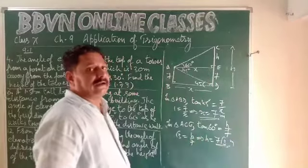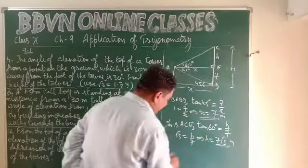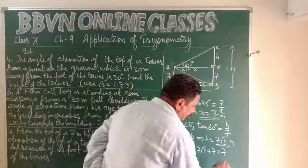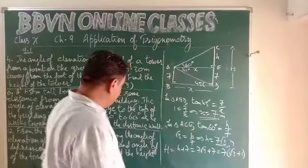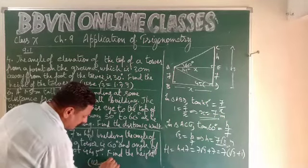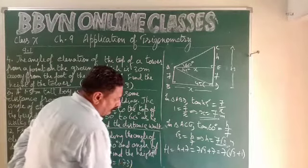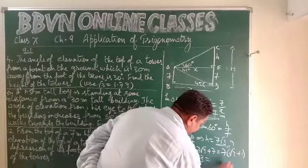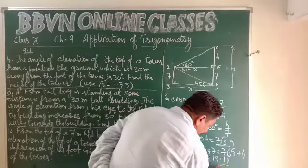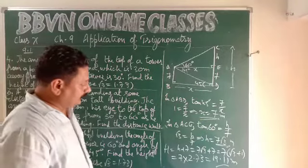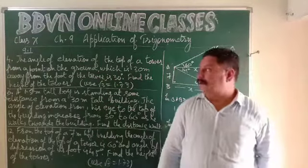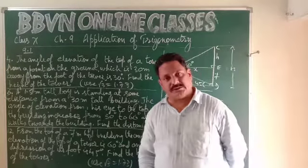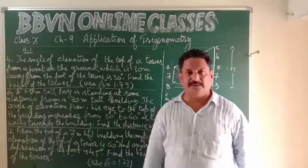The value of h is 7√3 meters, but this is not the entire height of the tower. The total height H = h + 7 = 7√3 + 7 = 7(√3 + 1). If the question says use √3 = 1.73, then H = 7 × 2.73 = 19.11 meters. Practice as many questions as you can; in the next class we will solve more difficult and complicated ones.